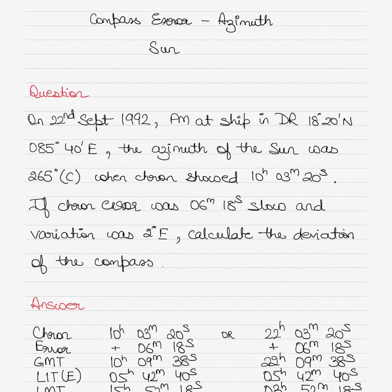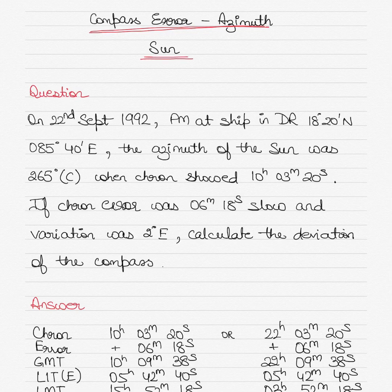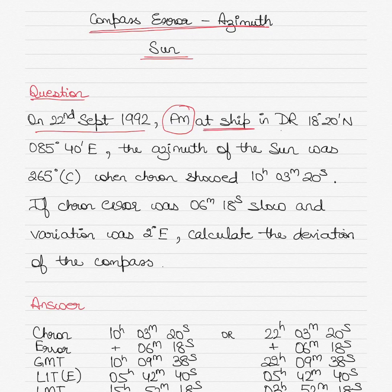Hi all, today we'll be solving a compass error question. We'll be using the azimuth method to calculate the compass error, using the Sun as a celestial body. The question is: it's 22nd of September 1992, and it's p.m. at the ship — so it's evening on your ship — and the dead reckoning (DR) position is 18 degrees 20 minutes North.